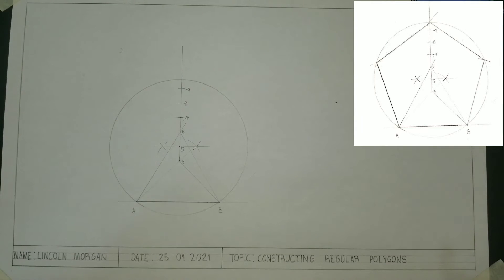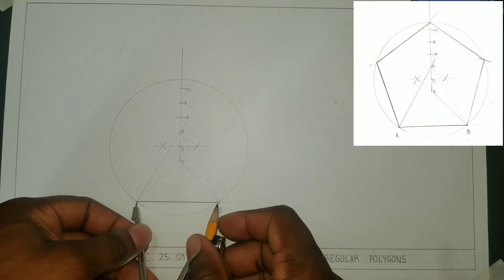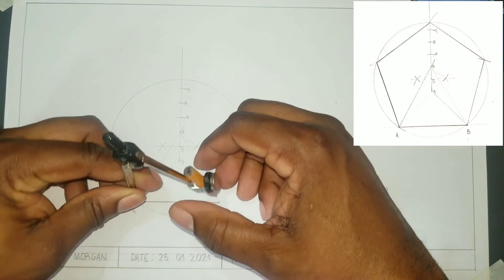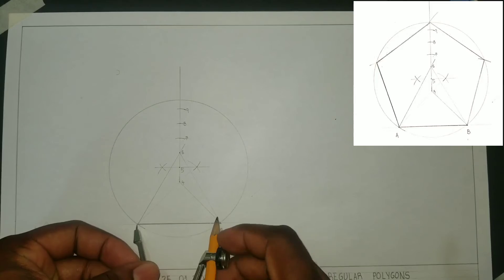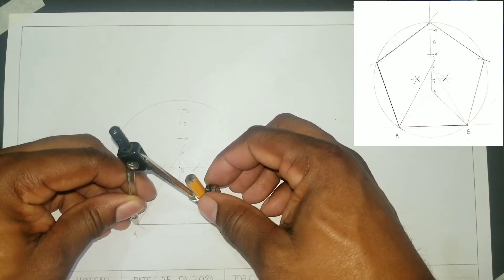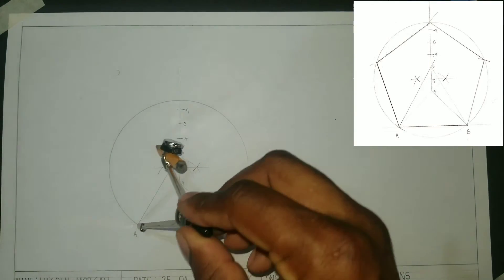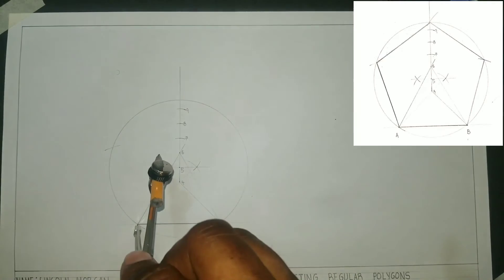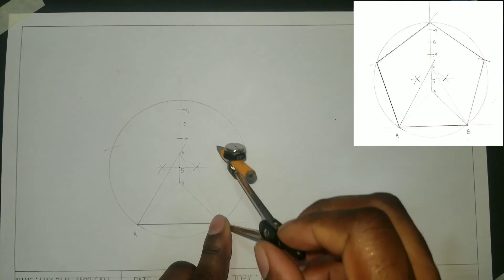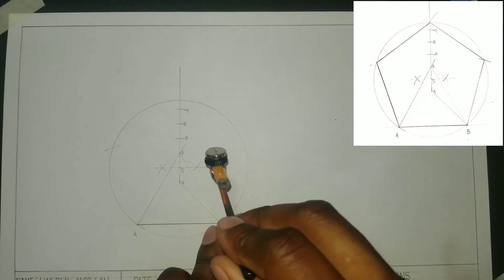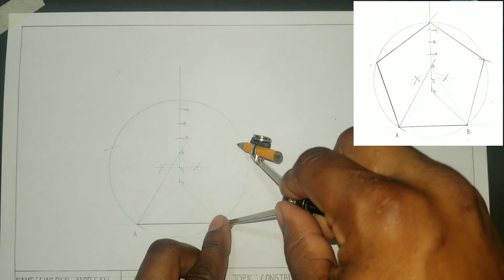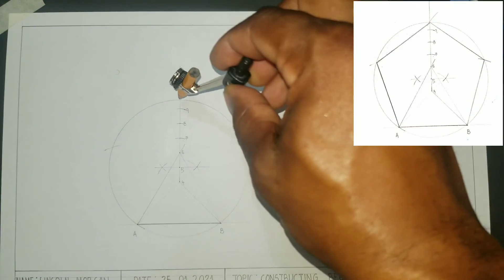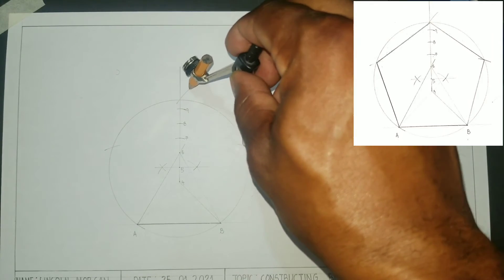Now we will open our compass to AB. AB is the length of our first side of our pentagon. We will put our compass at A and scribe an arc to cut our circle. We will put our compass at B and scribe another arc to cut our circle.